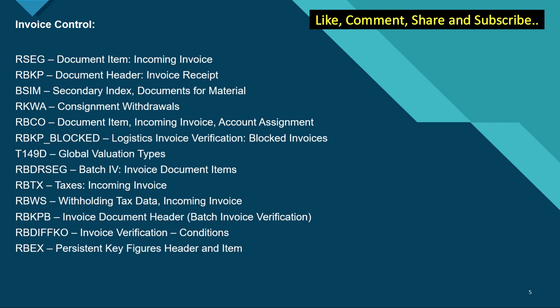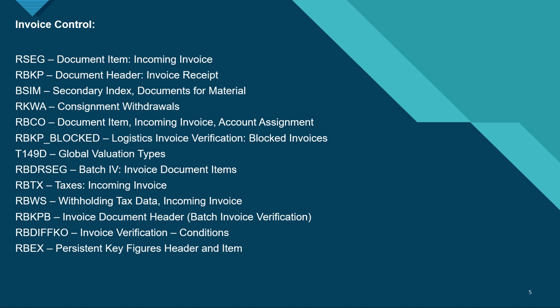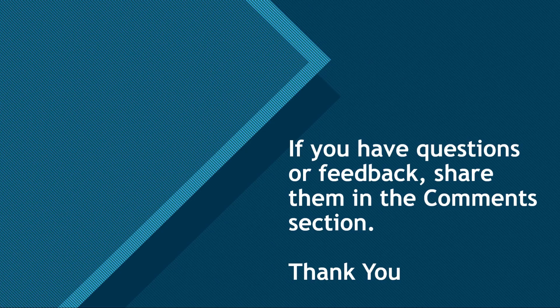RBCO is document item incoming invoice account assignment. T149T has the global valuation information. RBTX has the taxes of the incoming invoice. RBWS has the withholding tax data. RBKBB has information about invoice document header. And lastly we have RBEX, which is the persistent key figures header and item. So that is all in this video.